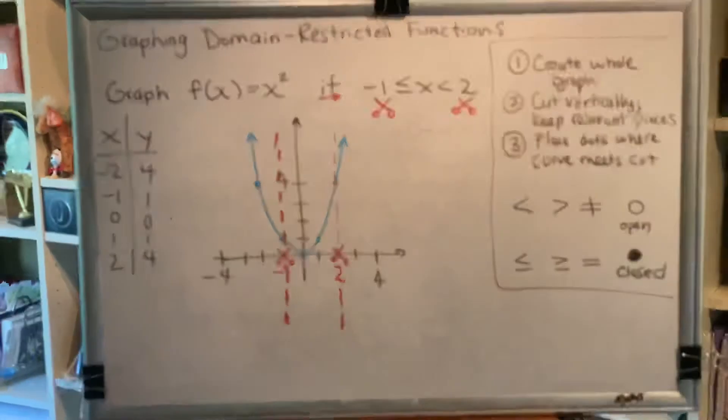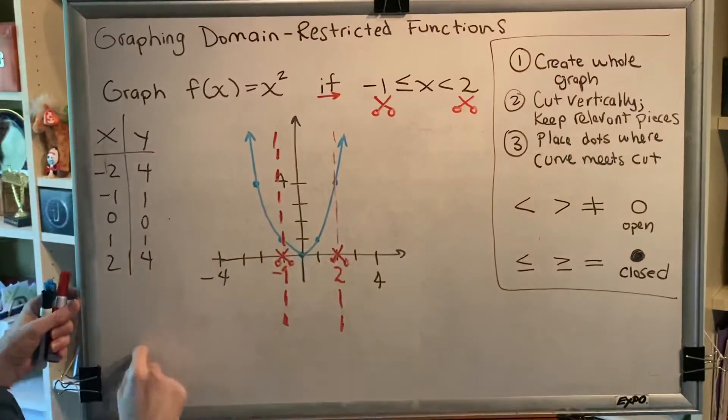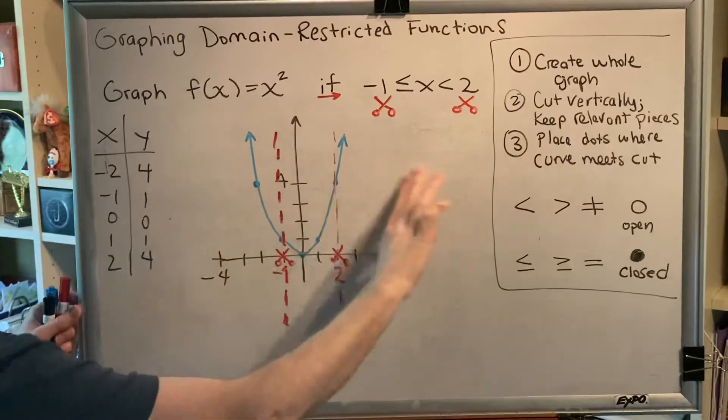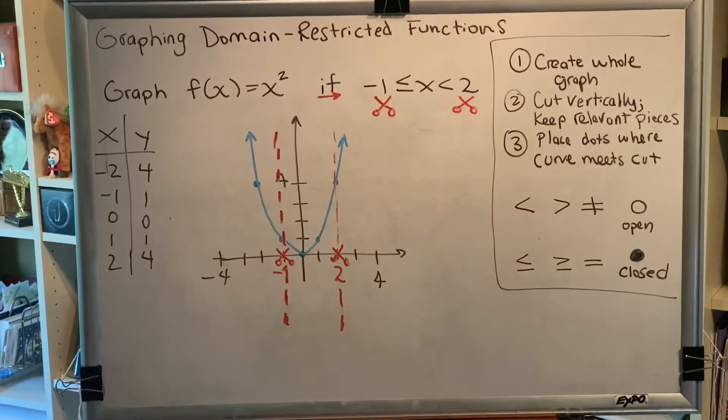Alright, now my graph has been cut into pieces. I started with one graph, I cut it twice, and now it's in three pieces: the left, the right, and the middle. What I need to figure out is, which part of this graph should I keep, and which part of this graph should I throw away?